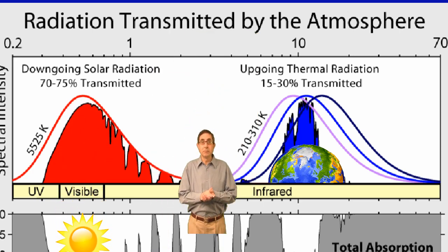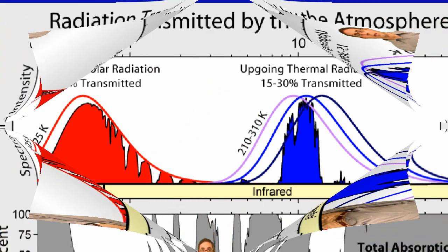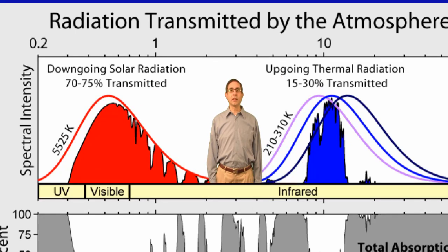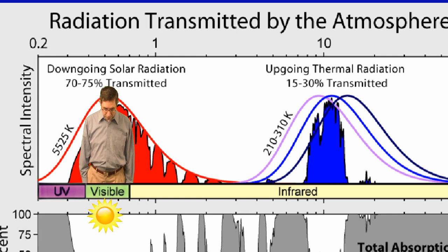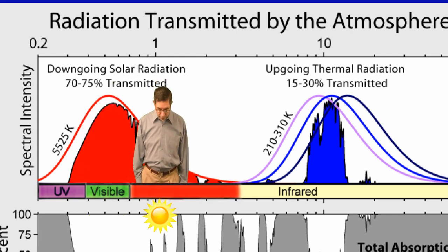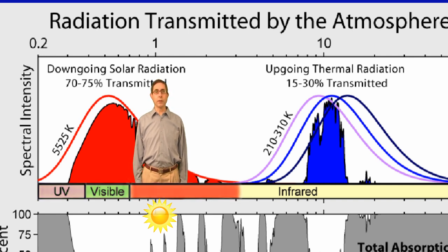I think we get it, Bill. The incoming energy from the Sun includes ultraviolet, visible light, and the shorter end of the infrared spectrum, called the near-infrared and shortwave infrared.